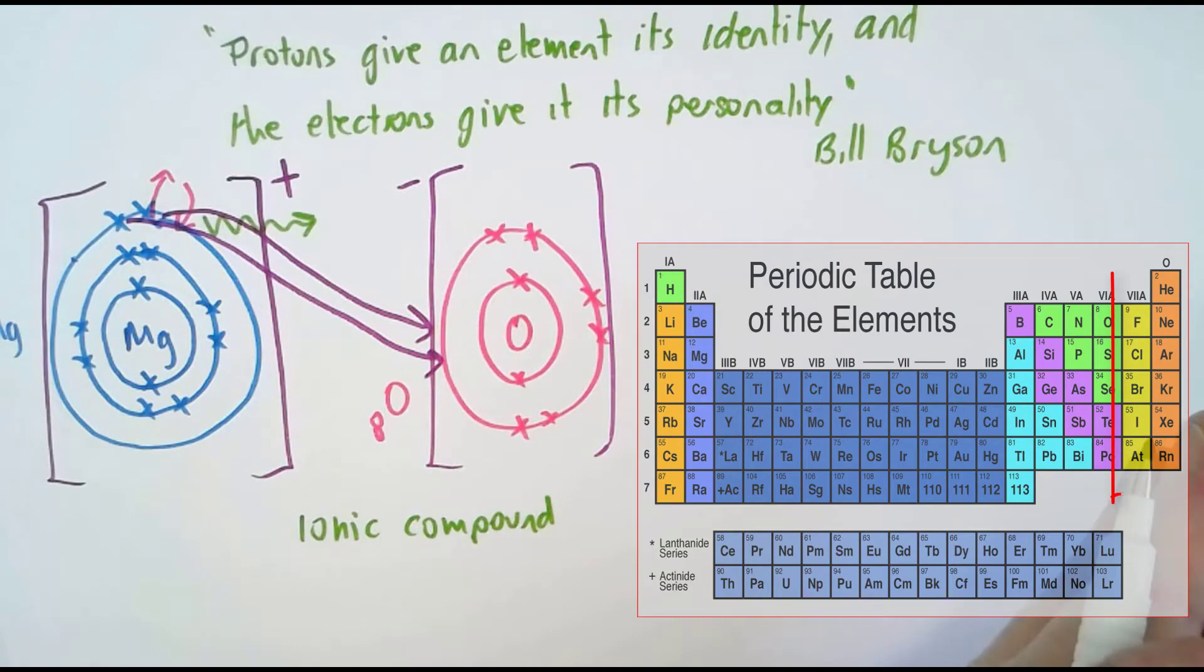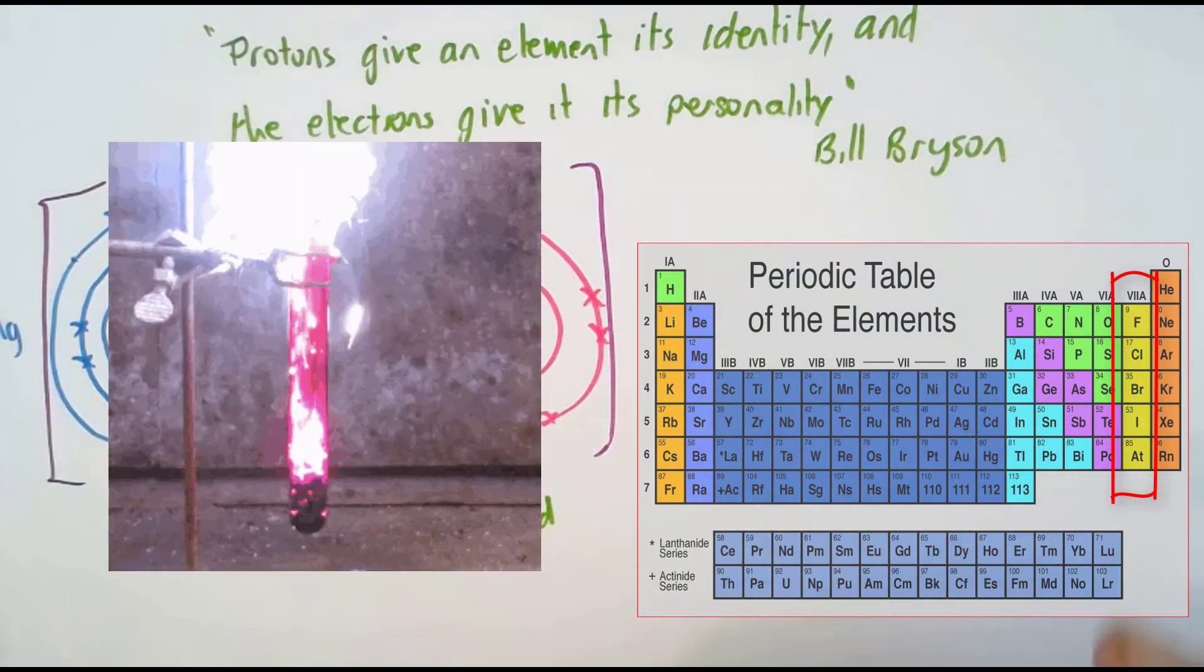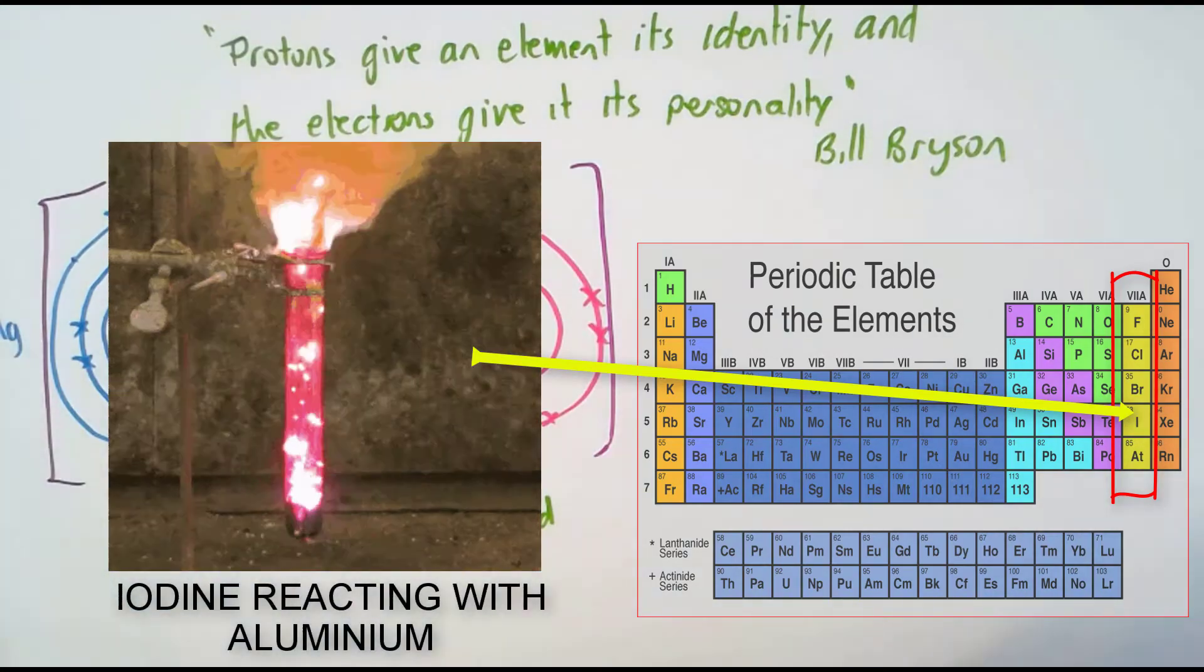Elements in group 7 have 7 electrons in their outer shell. So they are also very reactive, because they only need to receive 1 electron.